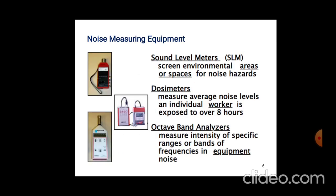The three equipment used for noise measurement are: the Sound Level Meter (SLM), the Dosimeter, and the Octave Band Analyzer. The SLM is used for screening environmental areas or spaces for noise hazards. The Dosimeter measures the average noise level that an individual worker is exposed to over eight hours. The Octave Band Analyzer is used to measure the intensity of specific frequency ranges or bands in equipment noise.